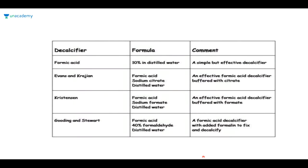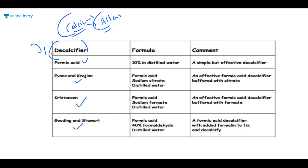This is additional information for the next AIIMS exam. Decalcifiers include formic acid, Evans, Crayon-Screen, Christian and Stein, Gooding and Stewart stains. You need a decalcifier whenever calcium abnormal accumulation can alter your test results. Formic acid + citric acid + distilled water, formic acid + formate + distilled water, and formic acid + formaldehyde + distilled water are the three magic methods. You can download this PDF file after the class.